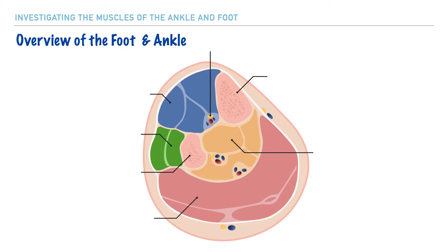Uniquely, muscles are arranged into compartments, and because they're arranged in compartments, it means there are some similarities between them. In this case, the similarities help us to have a greater understanding of the actions they perform. So specifically, if we were to create a cross section of the lower leg, we'd see exactly what you see on the screen here — the muscles and various structures neatly organized.